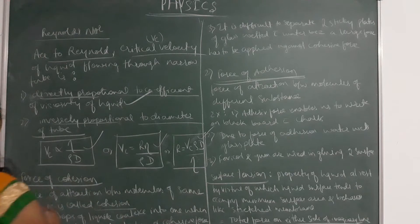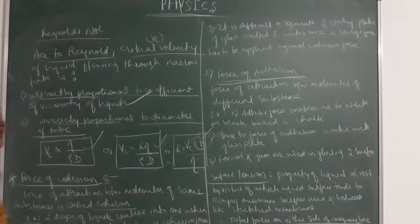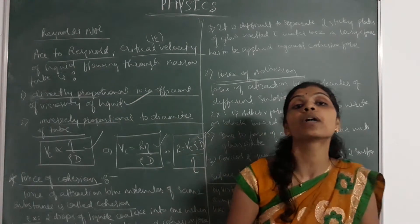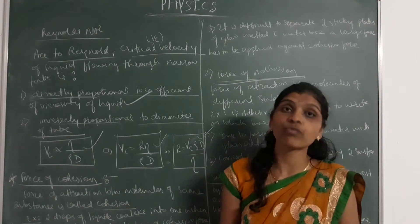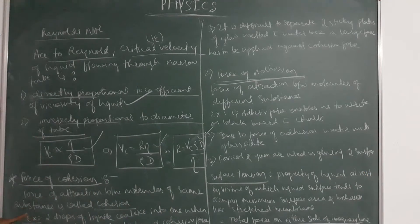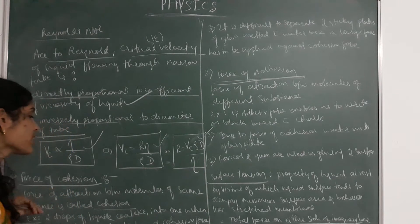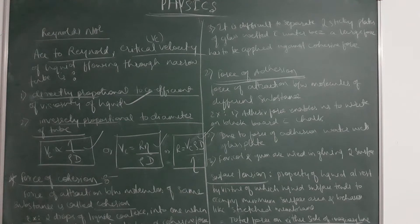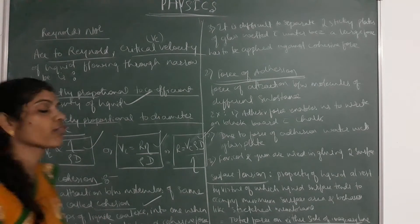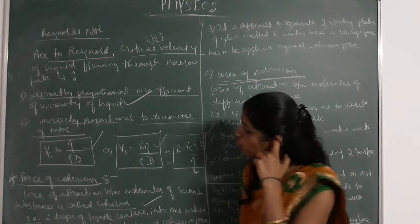Force of cohesion: the force of attraction between the molecules of the same kind is called the cohesive force or force of cohesion. Some examples of cohesive force: two drops of liquid coalesce into one when brought into mutual contact because of cohesive force. It is difficult to break a drop of mercury because of the large cohesive force present in mercury.